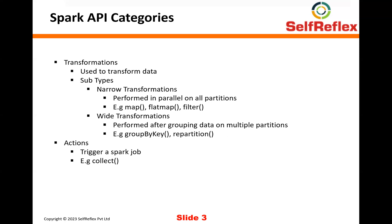The second thing is actions. An action is something which basically triggers a job. An action makes Spark really execute everything that you have specified as part of your other transformations. So now let's look at an example to understand it in more detail.